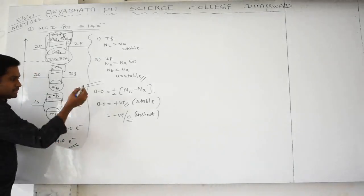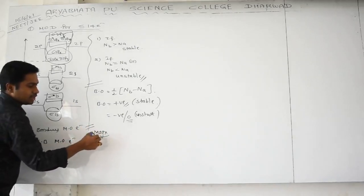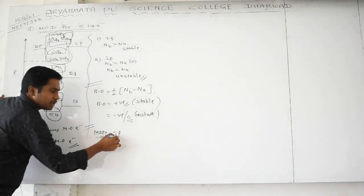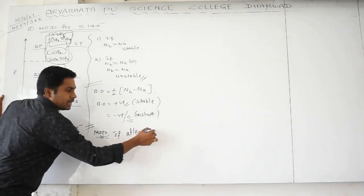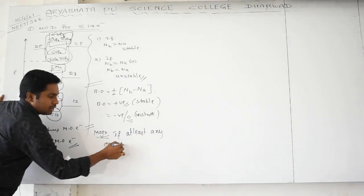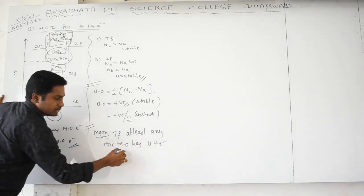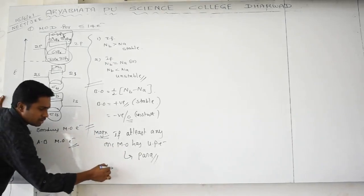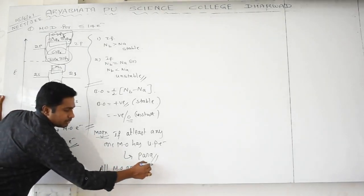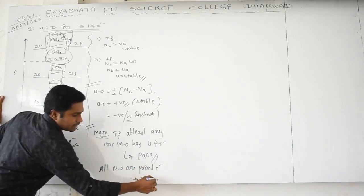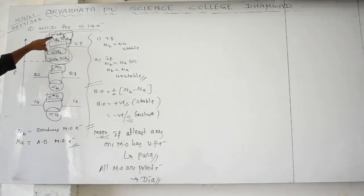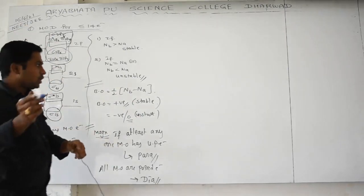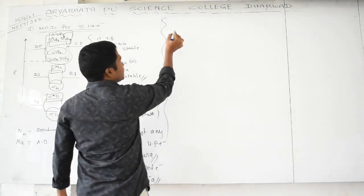For magnetic nature: if at least one molecular orbital has an unpaired electron, the substance is paramagnetic. If all molecular orbitals have paired electrons, the substance is diamagnetic.